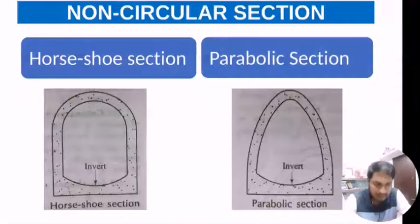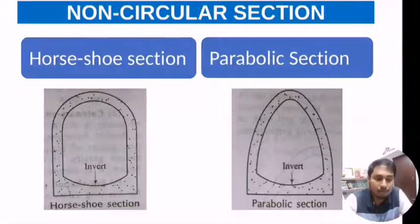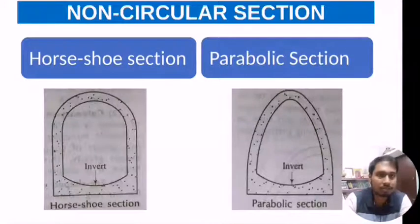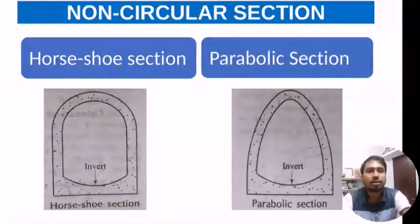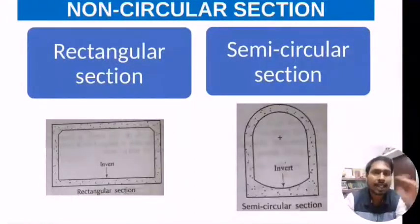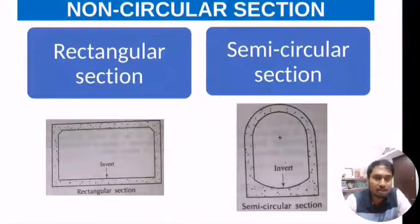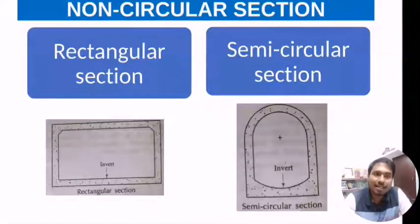The parabolic section of sewer is suitable for carrying comparatively small quantities of sewage. The rectangular section is the most stable section and is sometimes used as a storage tank.